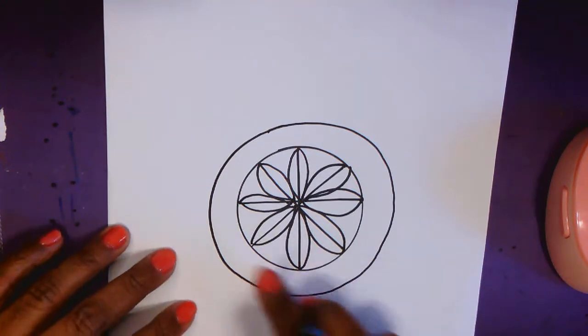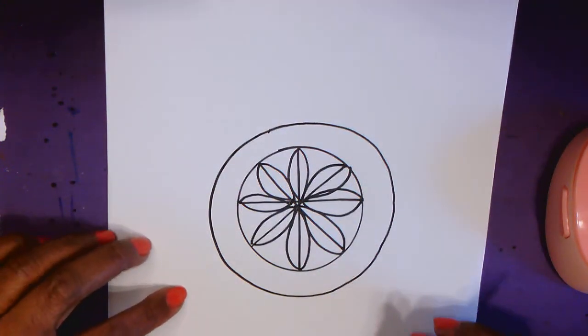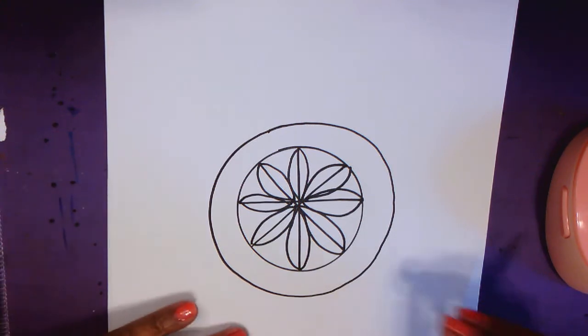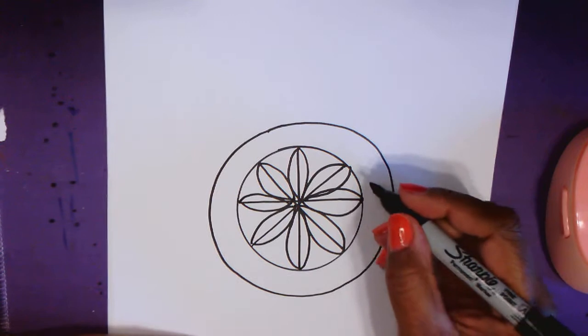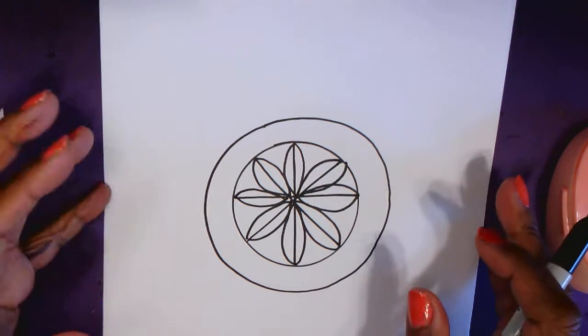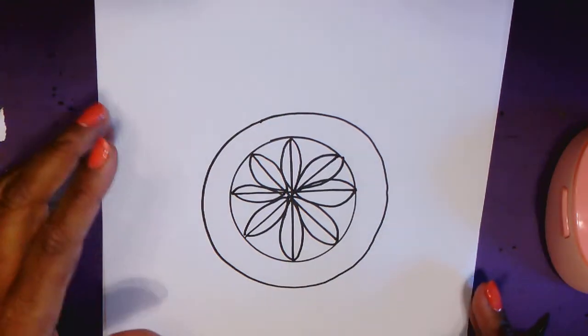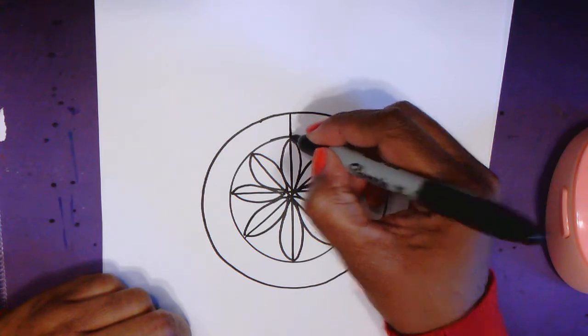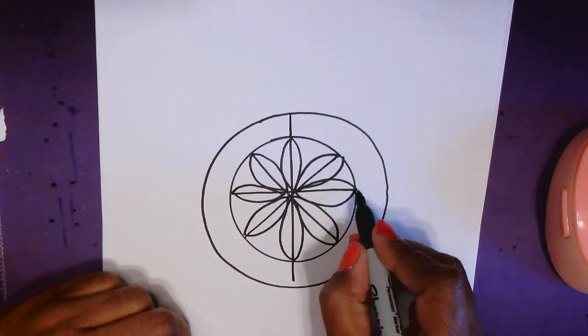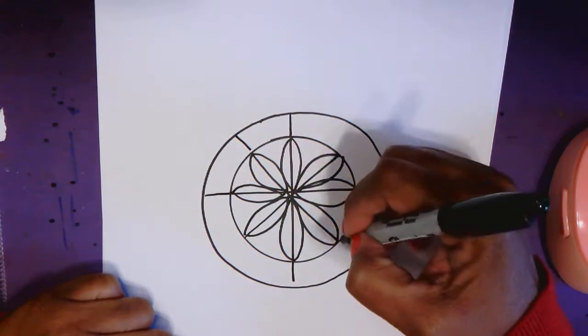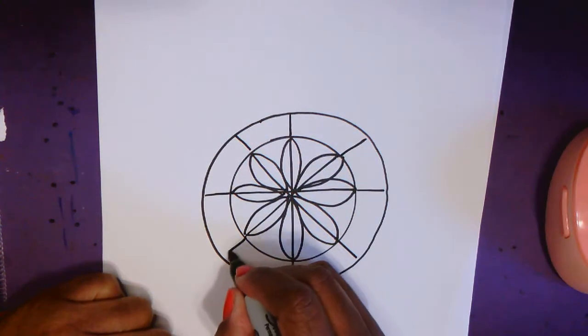So now this is our next row for our mandala. And remember we're just going to use shapes. So for this next row I think I'll choose circles. But before I do that I want to make sure that it is as symmetrical as possible. So do you remember that cross that I made in the beginning? I'm going to do it again.